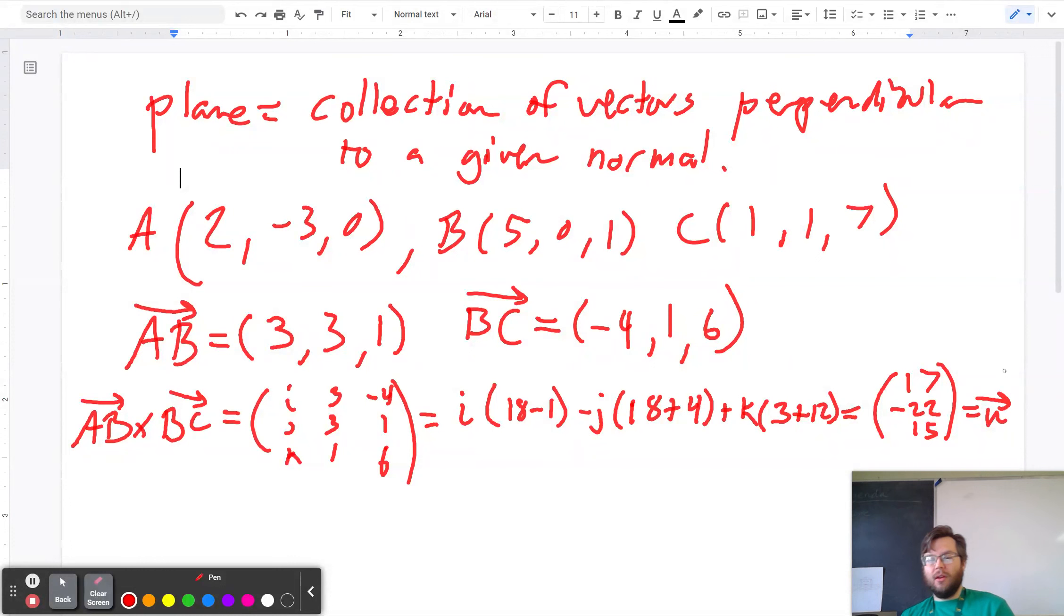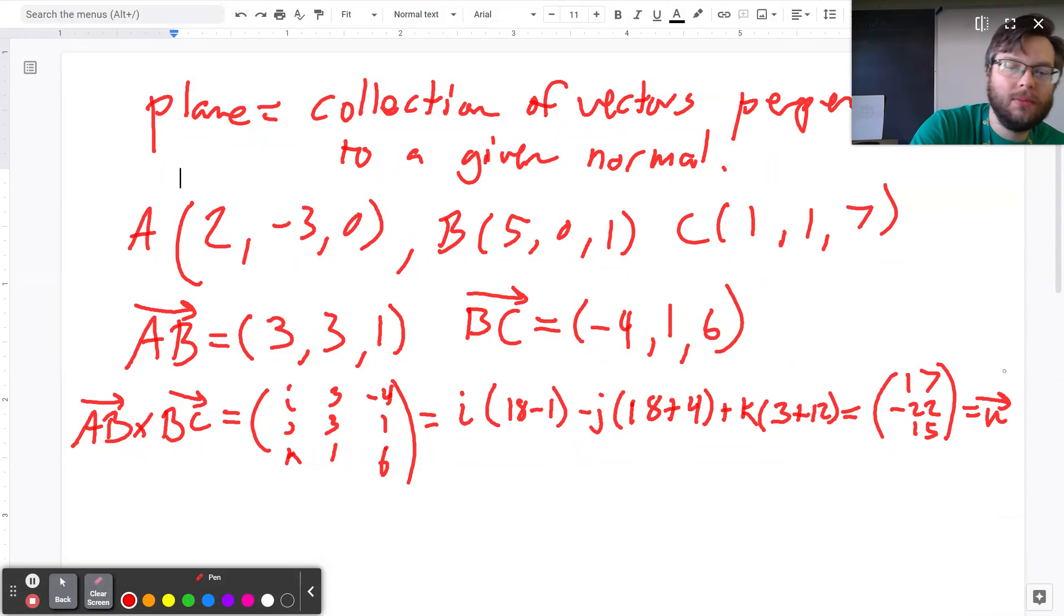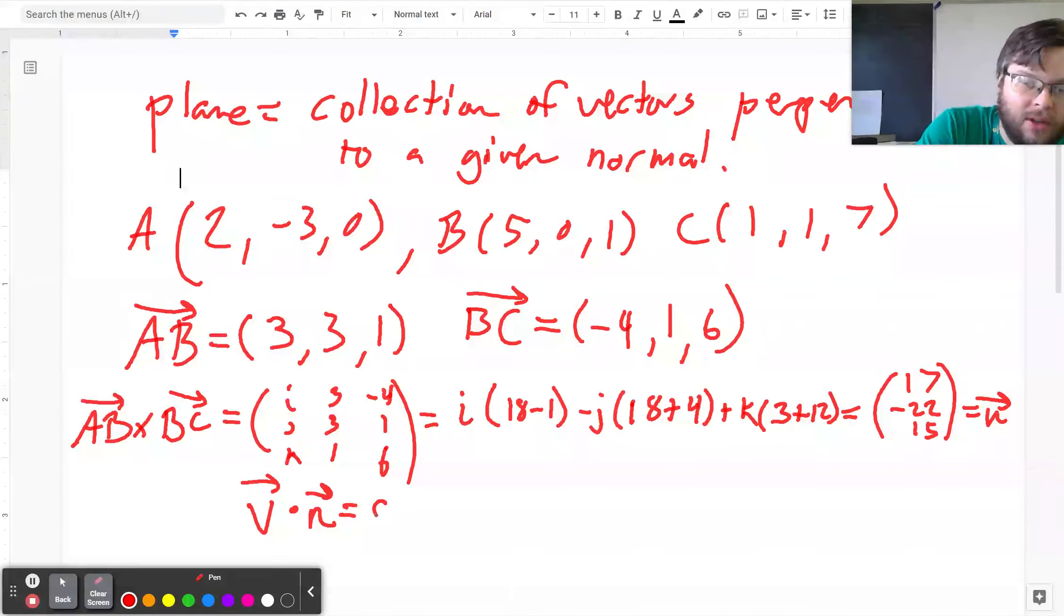So then all of the vectors in the plane are going to dot with the normal vector to equal 0 because they're all normal to it. So the vectors in the plane dotted with the normal vector are all going to equal 0.